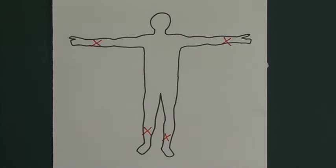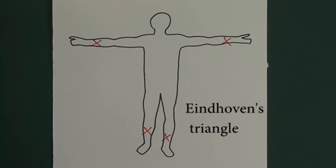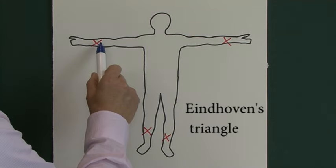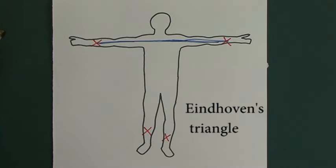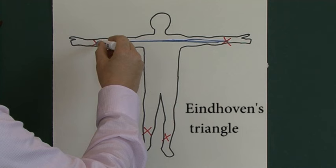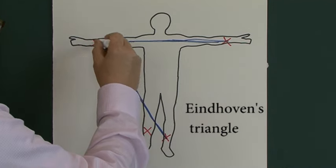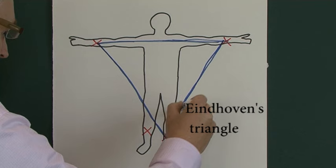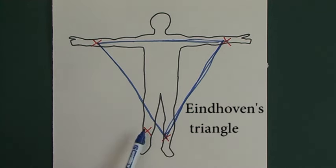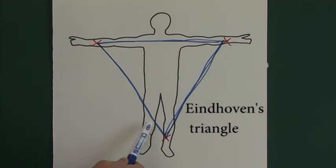What we can imagine is what is called Einthoven's Triangle. And Einthoven's Triangle is just that - it's a triangle. There's an imaginary line going from the right arm to the left arm, another line going down to the left leg, and another imaginary line going up to the left arm. As you'll notice, the right leg is ignored altogether, because the electrode on the right leg is just an earth.